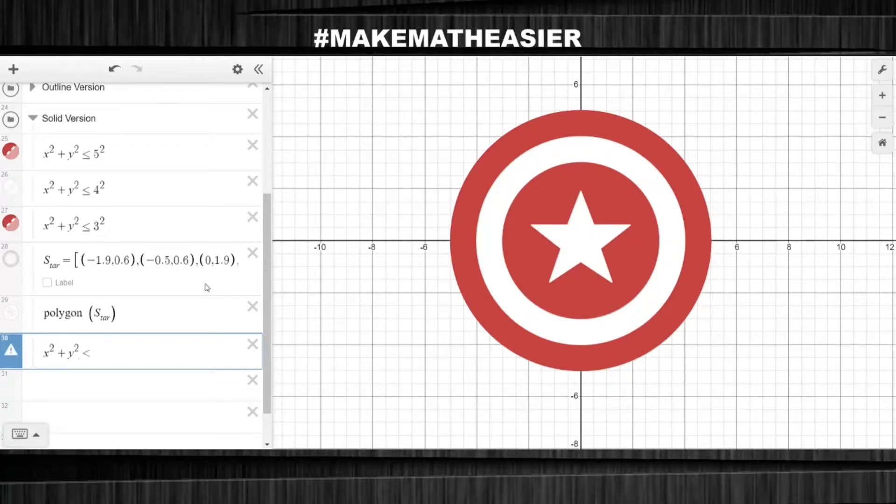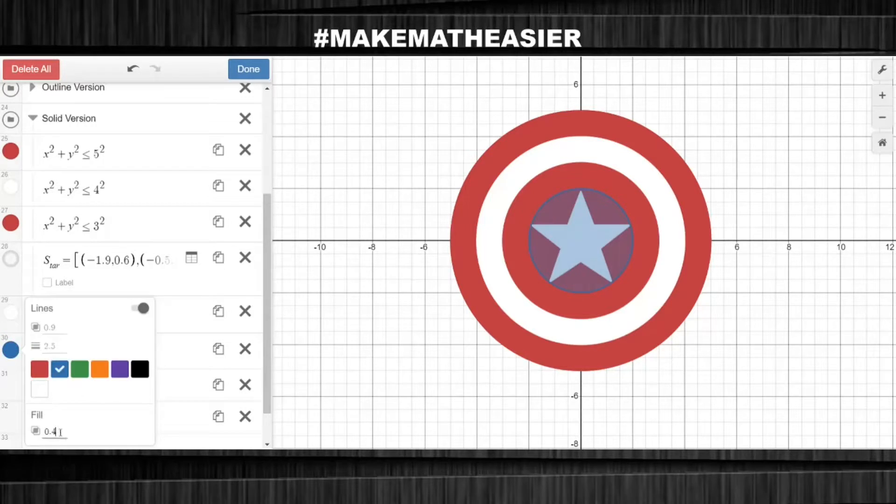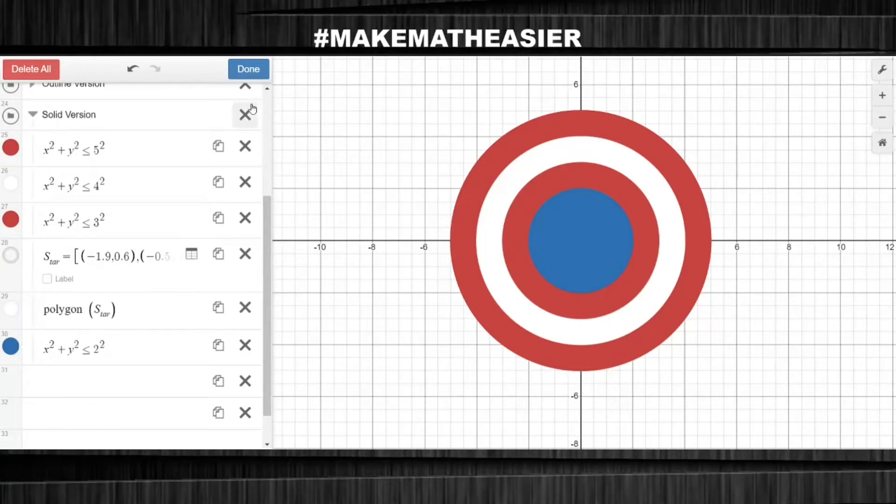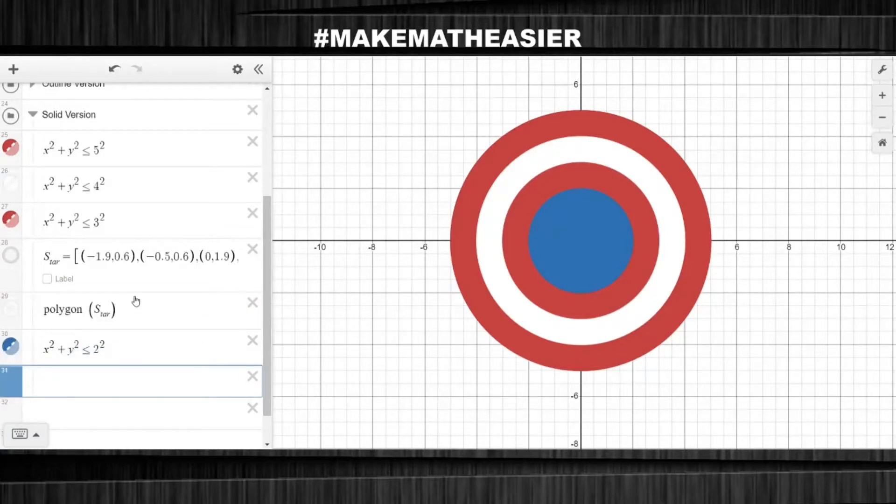Lastly, let's make the blue circle at the center of the shield by using the less than or equal to sign with the R size two circle. And there we go, Captain America's shield is finished.